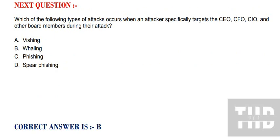Next question: Which of the following types of attacks occurs when an attacker specifically targets the CEO, CFO, CIO, and other board members during the attack? Option A: Vishing. Option B: Whaling. Option C: Phishing. Option D: Spear Phishing. The correct option is Option B.